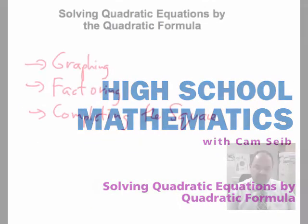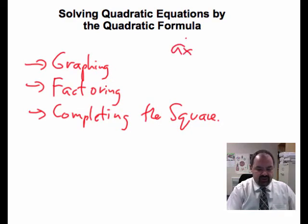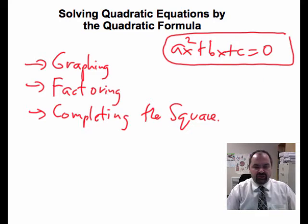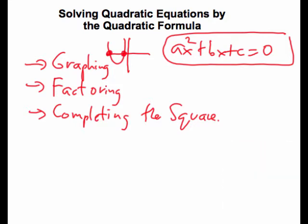In the past series of videos, we've talked about a number of methods for solving quadratic equations, ax squared plus bx plus c equaling zero. We know that a quadratic equation can have at most two solutions. The graphing method involves graphing the corresponding function y equals and looking at the x-intercepts. Because the graph is a parabola of a quadratic function, we know there can be only two solutions.